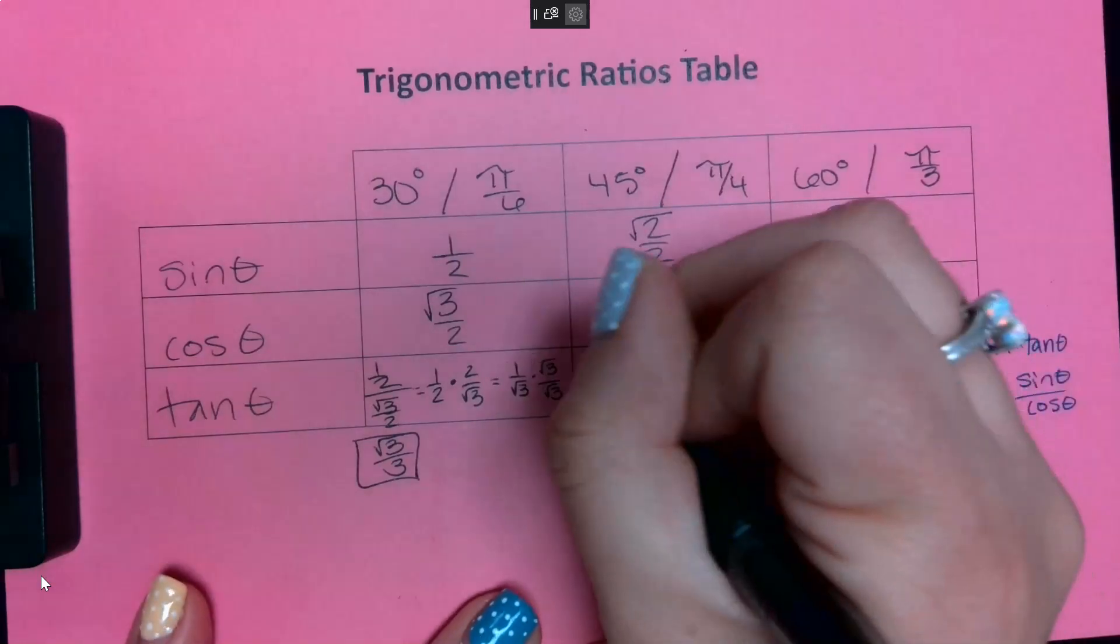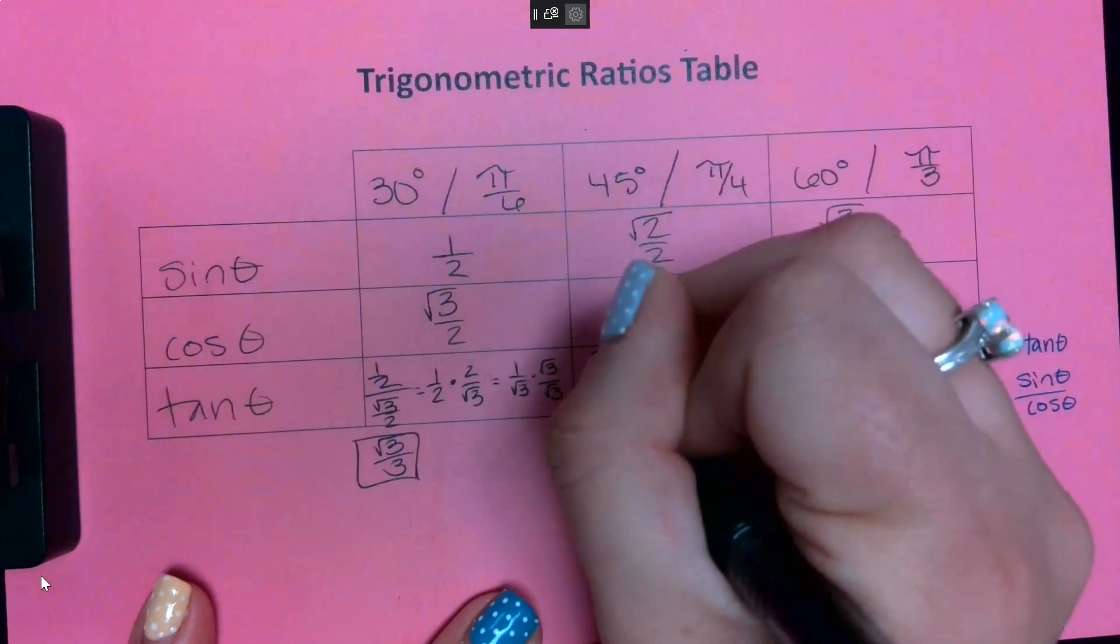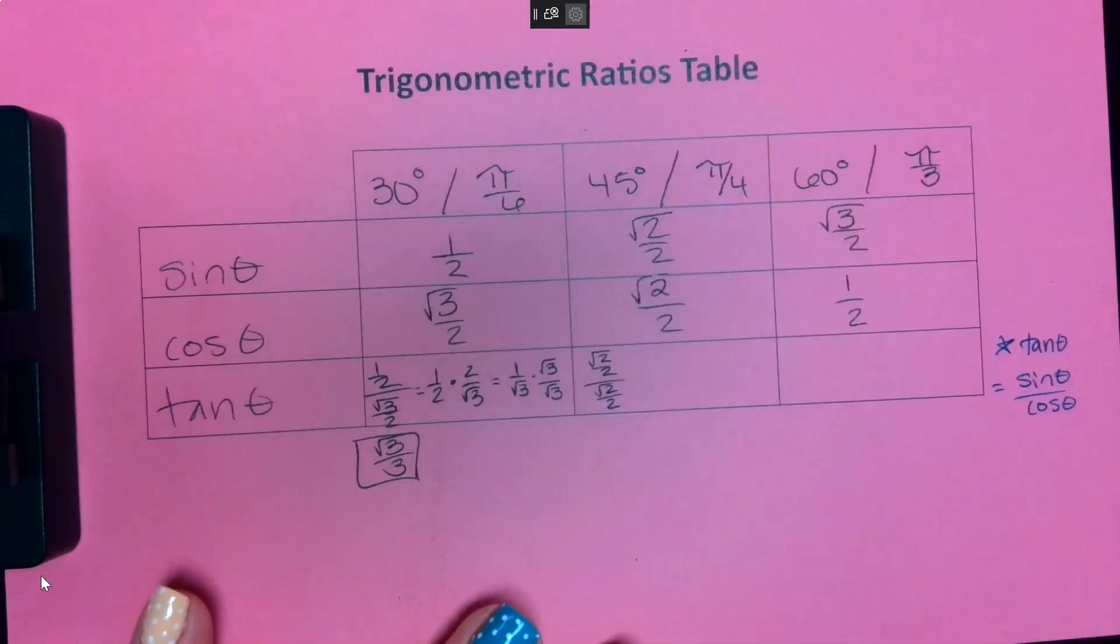Same thing for the 45. I have square root of two divided by square root of two over two. And I have the same thing divided by itself, so this is one.